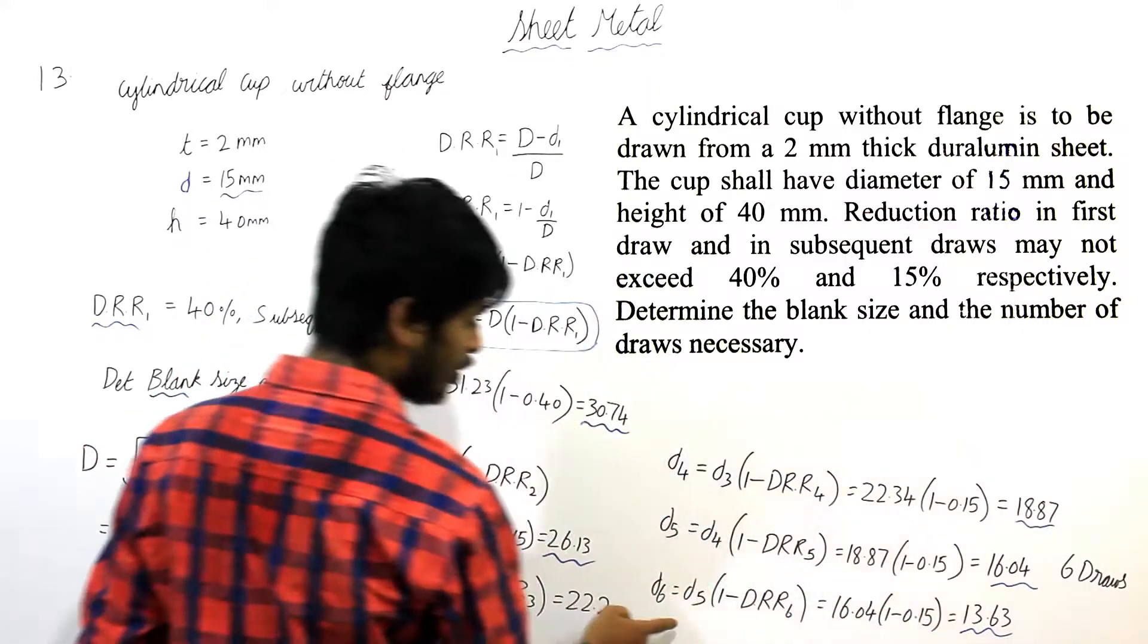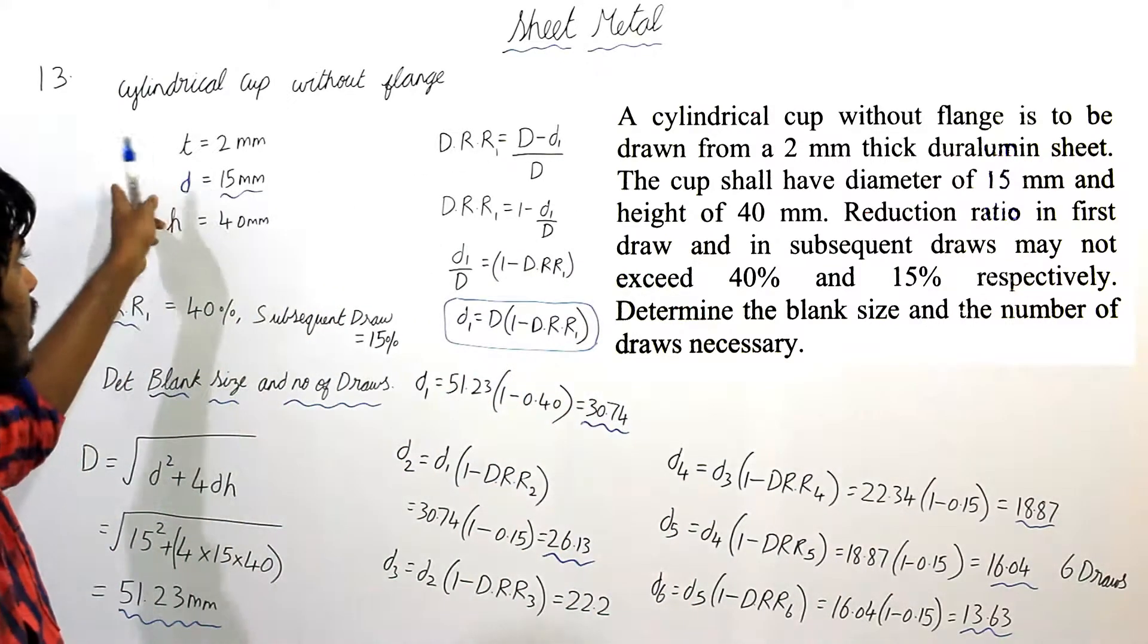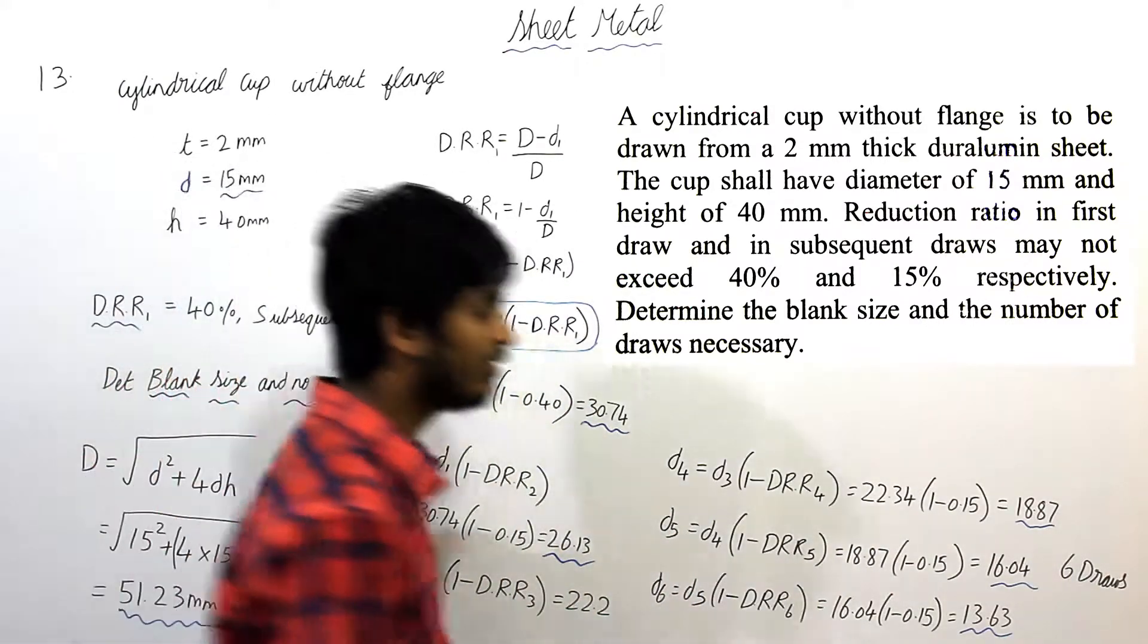So, we have to stop at small d5. So, the number of draws required for this deep drawing operation is 6 draws.